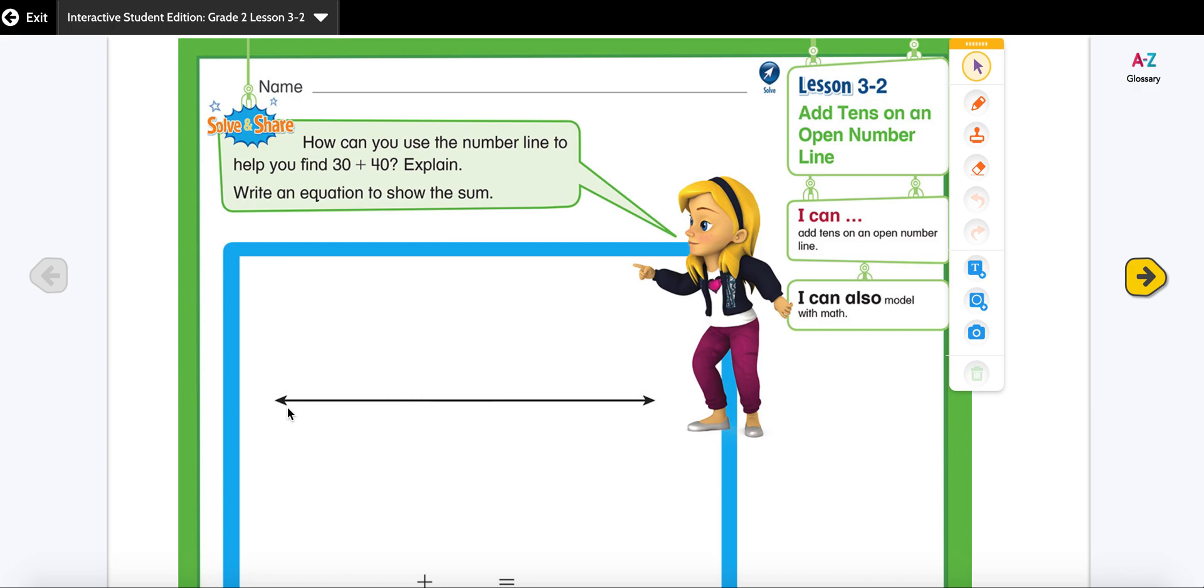So this is our open number line. This is called an open number line because it has arrows on both sides that shows that it can be extended on both sides.